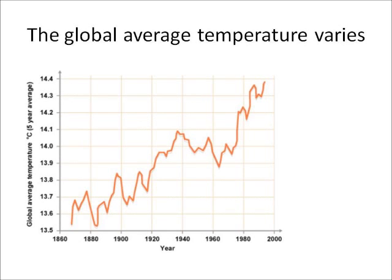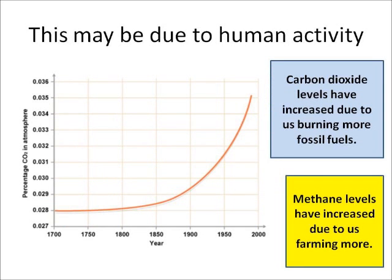Scientists have recorded that the average temperature of the Earth doesn't stay the same — it varies and changes. In fact, over the last 150 years the temperature of the Earth has increased, and this graph shows that. So what can we say for certain? We know that the global temperature has gone up.